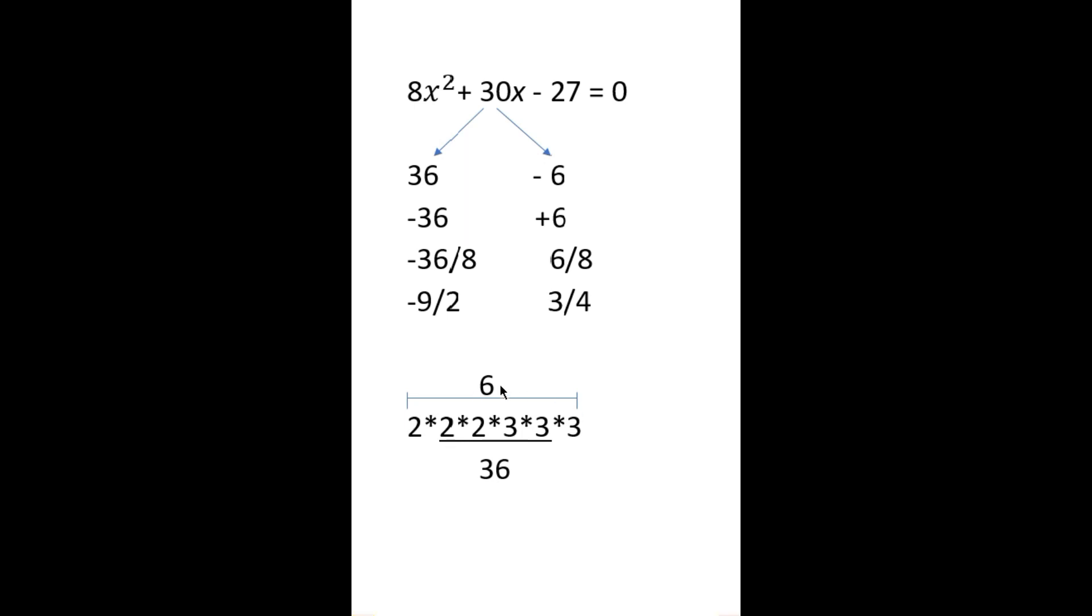So we can make 30 equal to 36 minus 6. Now just change the sign, so minus 36 and plus 6. Now what you have to do is divide the minus 36 by 8 and